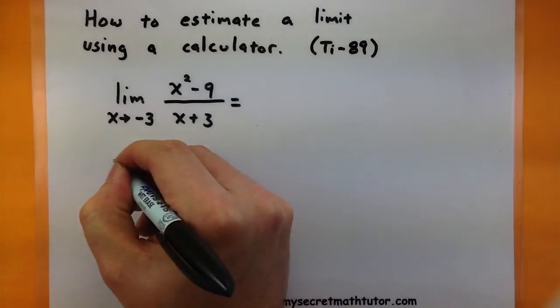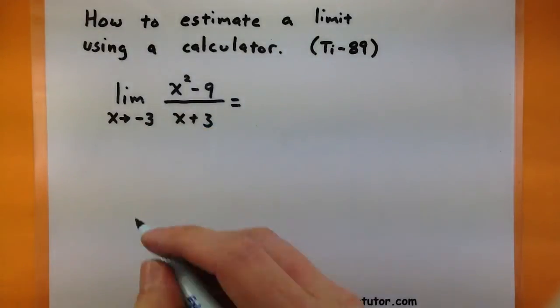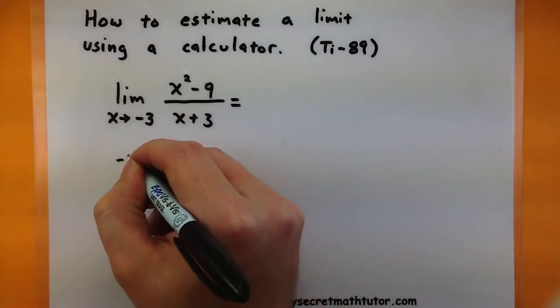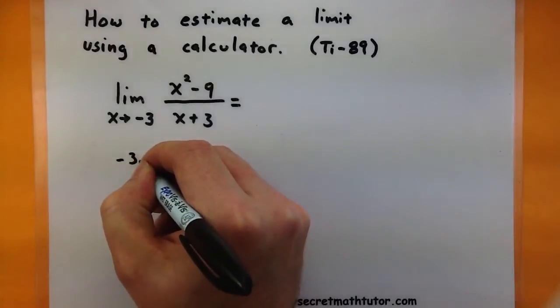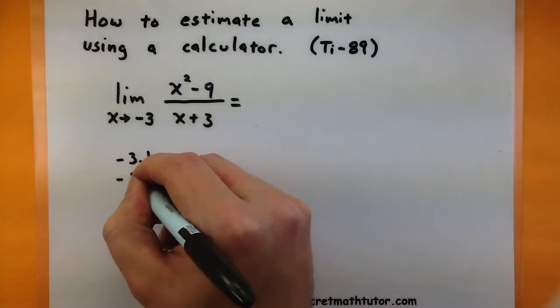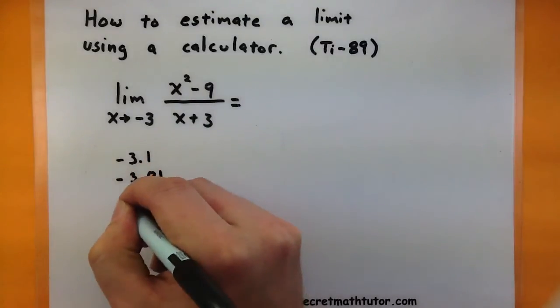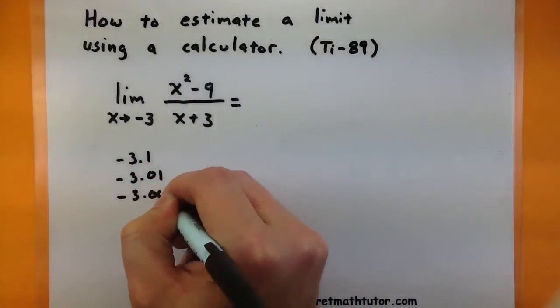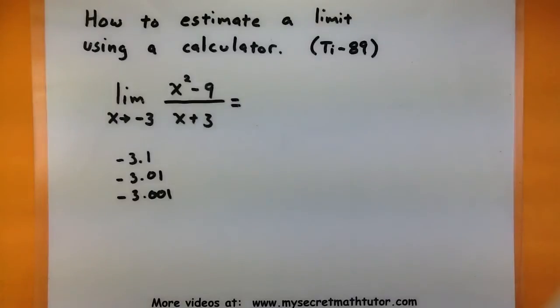So let's go ahead and choose some values that are really close to negative 3. I'll choose some on the left side like negative 3.1, negative 3.01, and negative 3.001. So all of those are on the left side of negative 3 and they're getting closer to negative 3 the further I go out on the zeros.